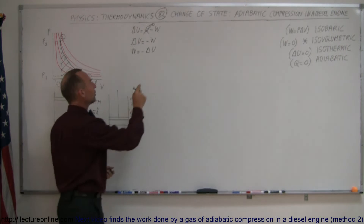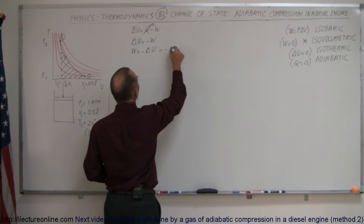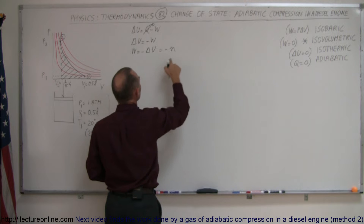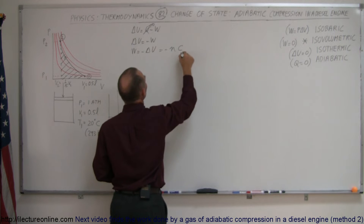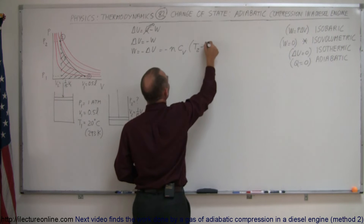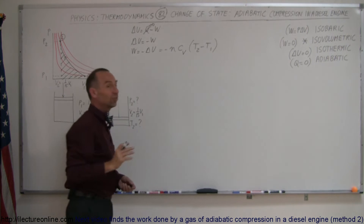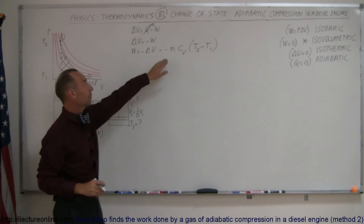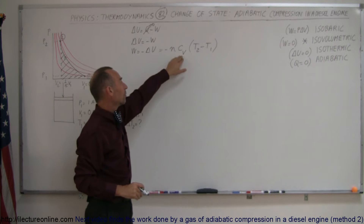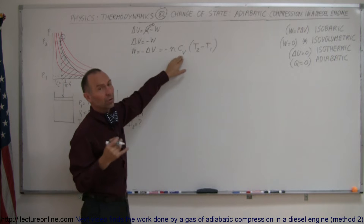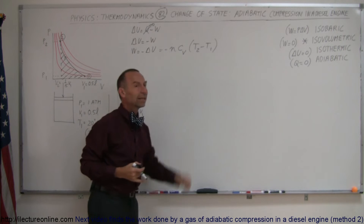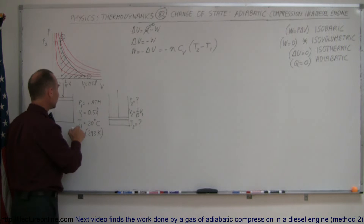The equation for delta U is N times Cv times the change in temperature, which is T2 minus T1. All we need to know is how many moles of gas we have in the cylinder, Cv for a diatomic gas (since air is diatomic), and the beginning and ending temperatures. We do know the beginning temperature, but we don't yet know the end temperature or the number of moles.